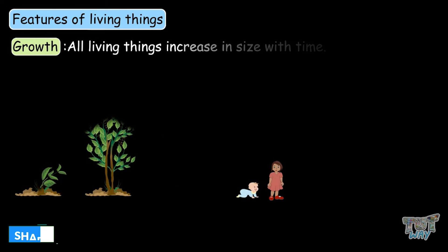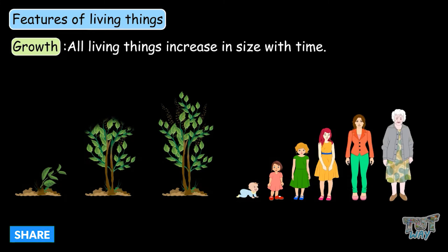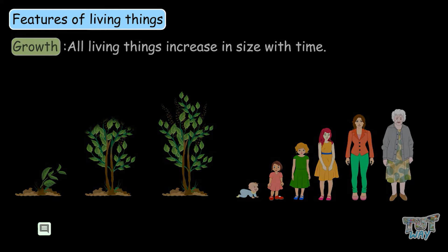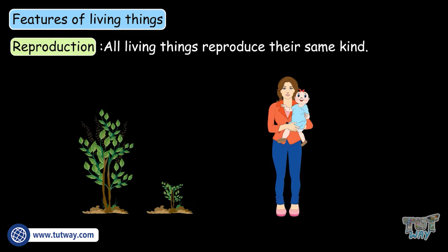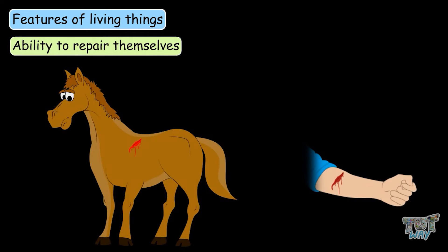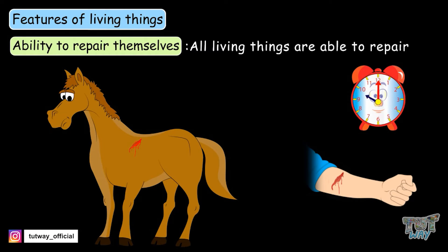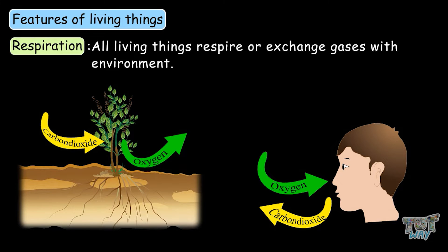The first feature is growth — all living things increase in size with time. Next is reproduction — all living things reproduce their same kinds. Next is the ability to repair themselves — all living things are able to repair themselves. Respiration — all living things respire or exchange gases with the environment.